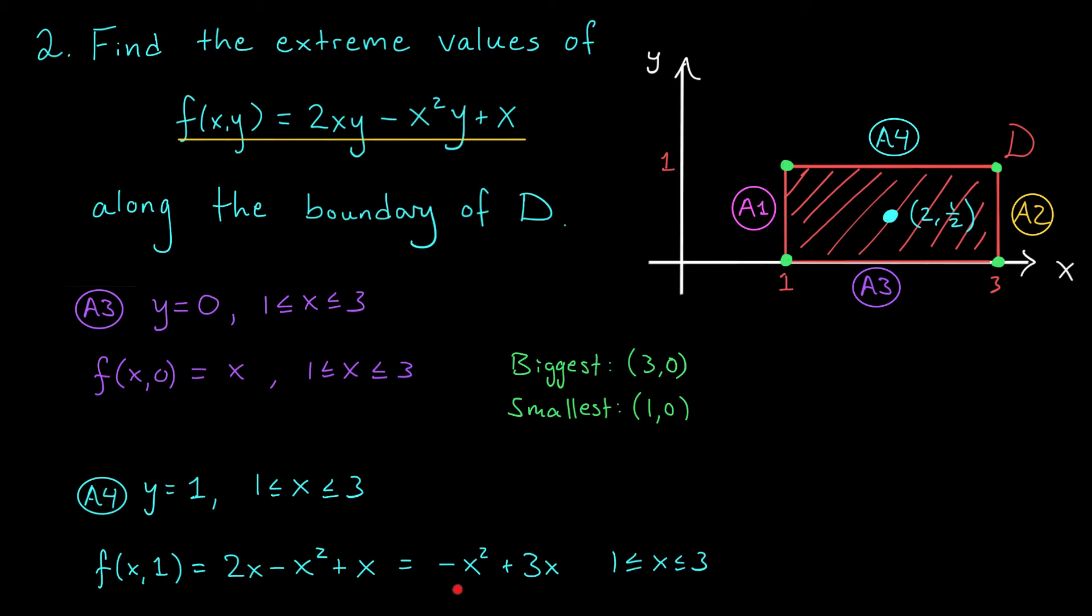Notice that this is a downward opening parabola. And if I factor this equation, I can write it as x times (3 - x). So it's a downward opening parabola with roots at 0 and 3. It's going to look something like this. Of course, we're only interested in this parabola between x = 1 and x = 3, but at least now we can see where it's going to be biggest or smallest. It's going to be smallest when x is 3, giving us an extreme point of (3,1). We can also see that our function is biggest right here, along the axis of symmetry. That's going to occur halfway between our two roots, x = 0 and x = 3. Halfway between these values is x = 1.5, or 3/2. So we get another extreme point of (3/2, 1).